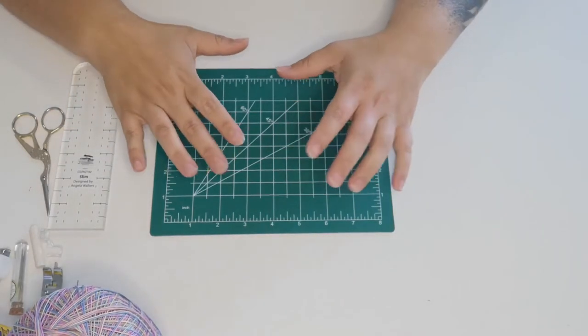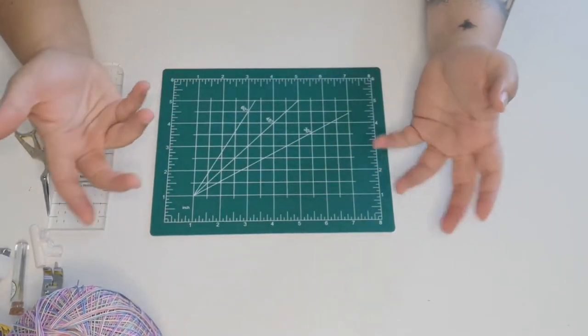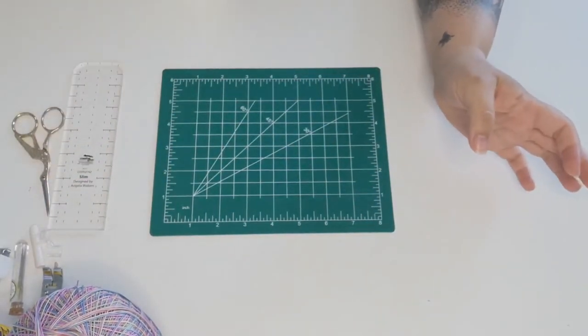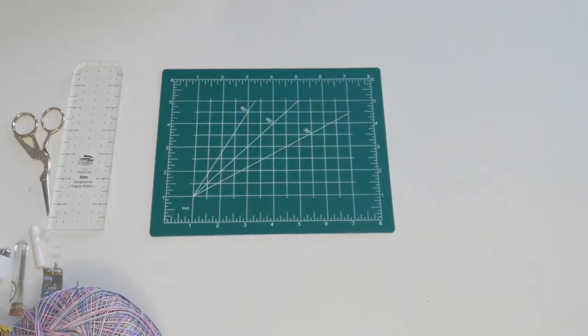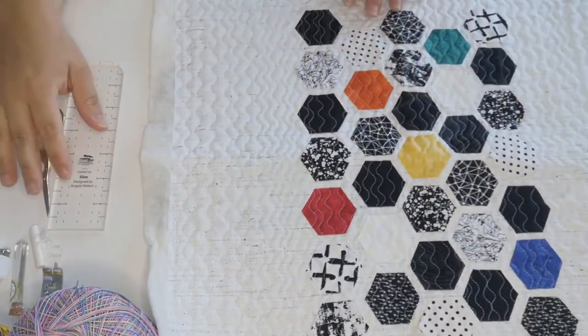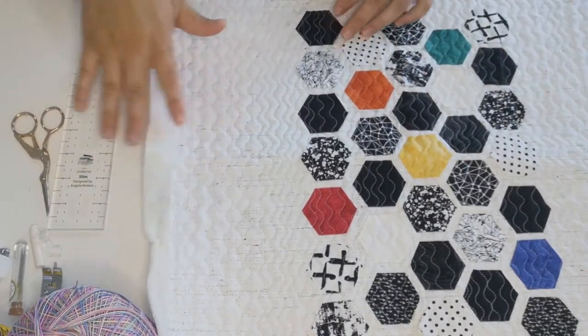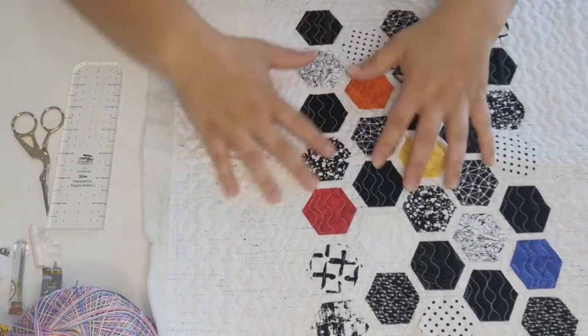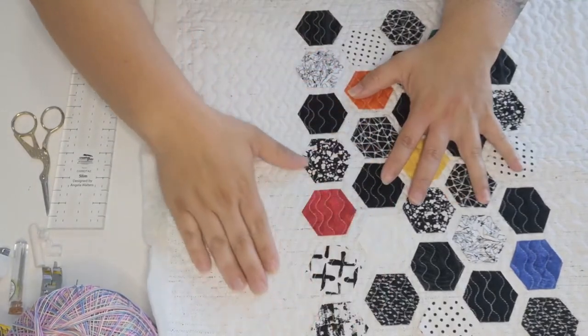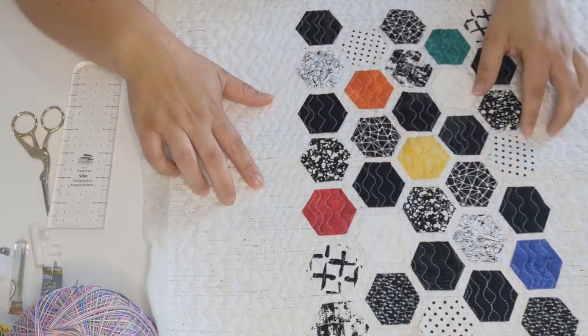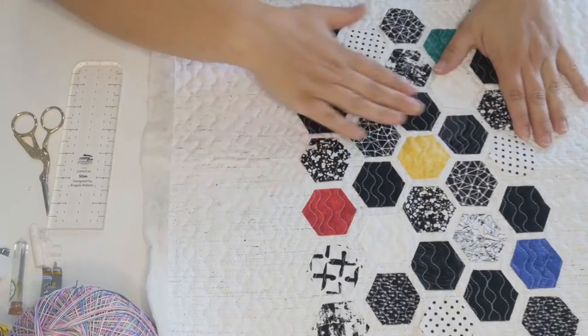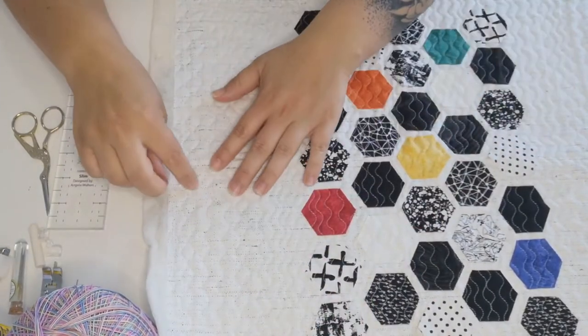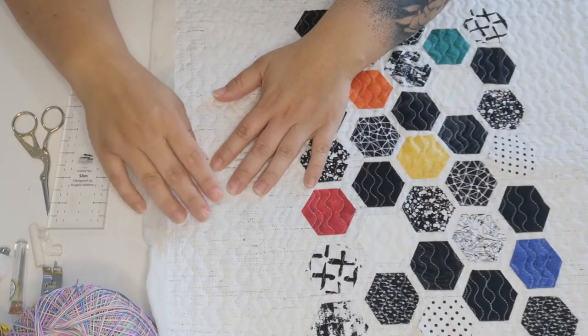Today we are going to be creating our quilt sandwich and basically what that is is your topper. I'm going to show you this quilt - I already have it all put together but I'll explain the layers to you. You have your topper which is your background fabric with all of your hexis attached to it and that is going to be 20 by 20.